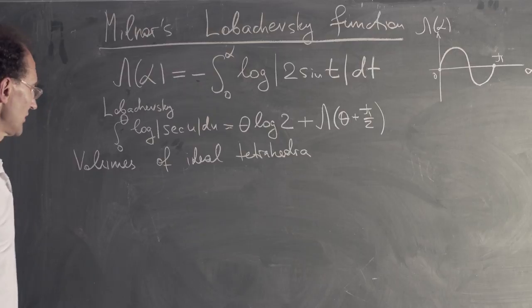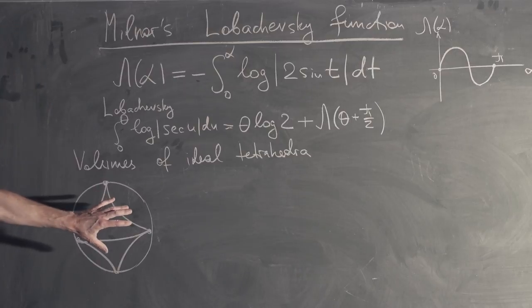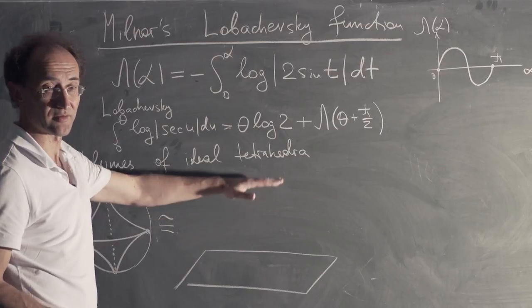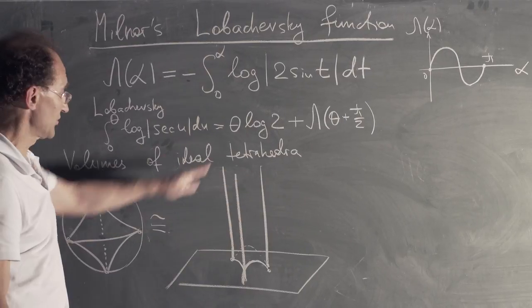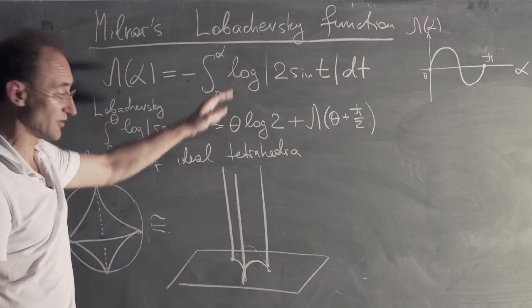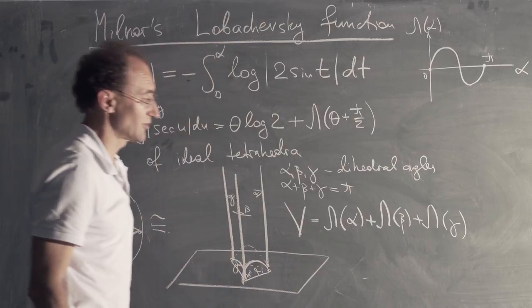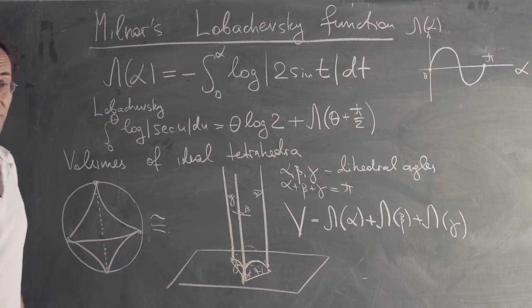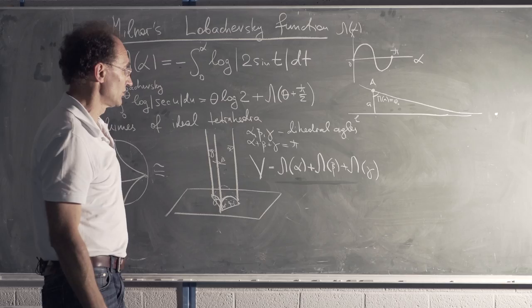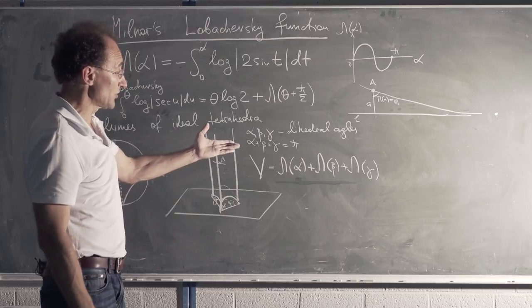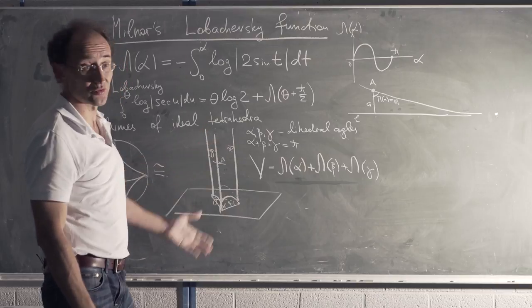This is an ideal tetrahedron. In hyperbolic geometry, there is a full space. The tetrahedron would have its own distance. This is a very important thing.